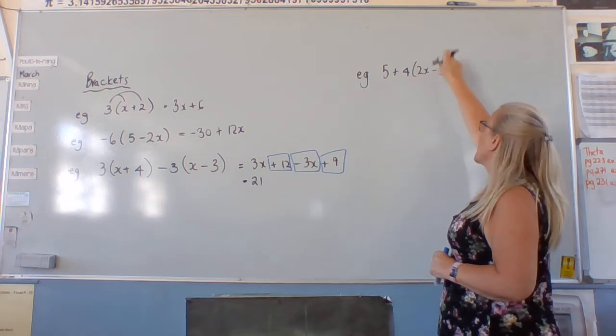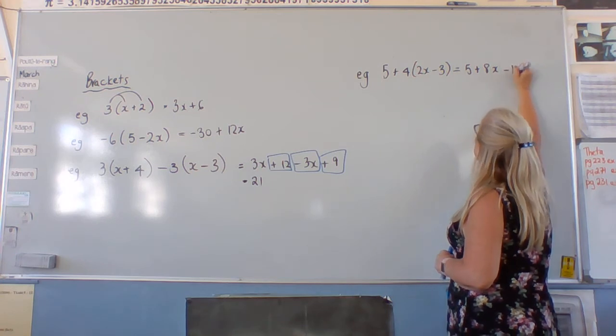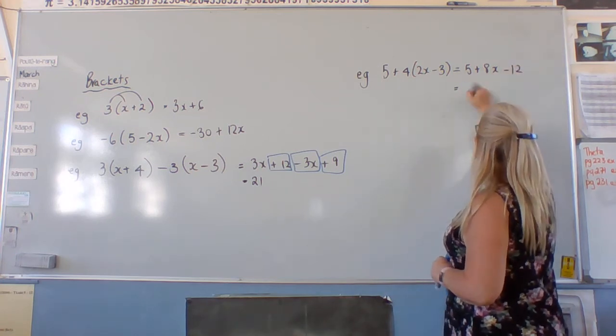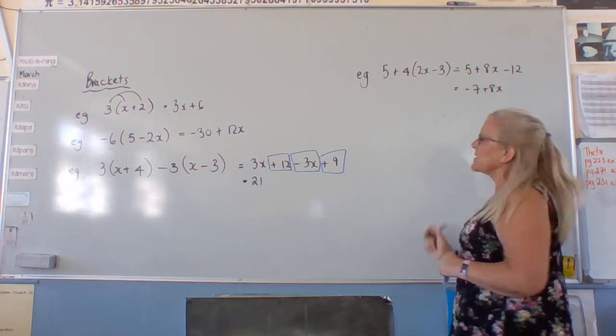So, to do four times this, we have to expand the bracket. So, five plus eight x minus twelve is negative seven plus eight x or eight x minus seven.